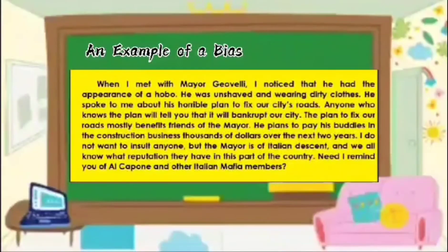Okay, so let's have an example here. So let's read. When I met with Mayor Juvelli, I noticed that he had the appearance of a hobo. He was unshaved and wearing dirty clothes. He spoke to me about his horrible plan to fix our city's roads. Anyone who knows that the plan will tell you that it will bankrupt our city. The plan to fix our roads mostly benefits friends of the mayor. He plans to pay his buddies in the construction business thousands of dollars over the next two years. I do not want to insult anyone, but the mayor is of Italian descent and we all know what reputation they have in this part of the country.